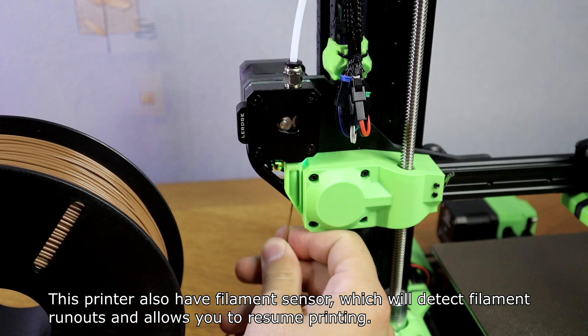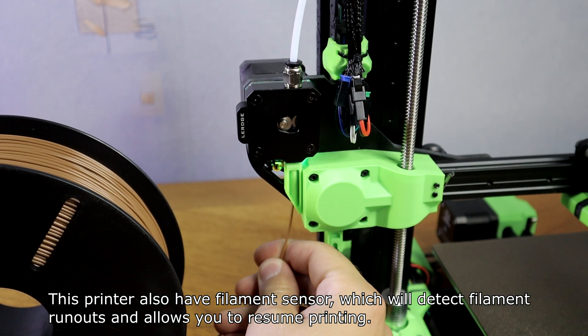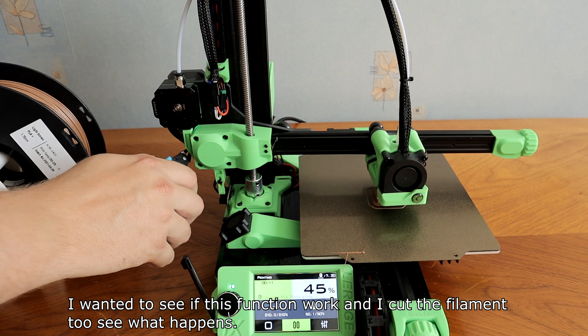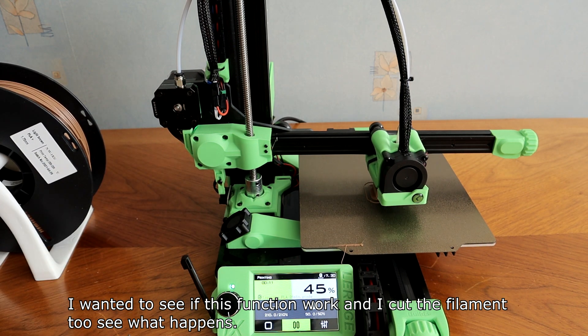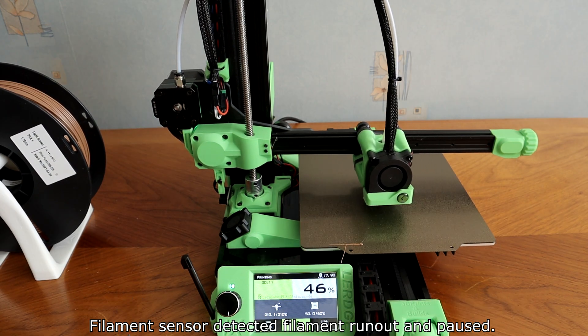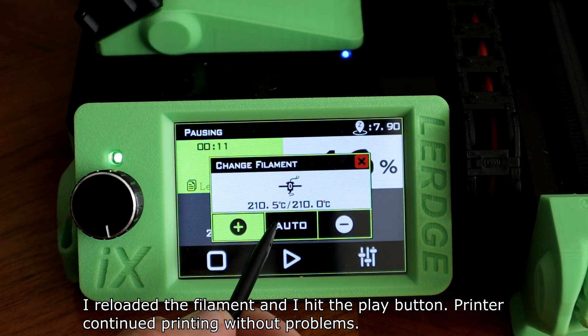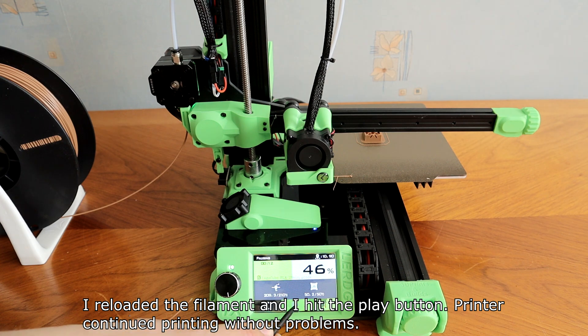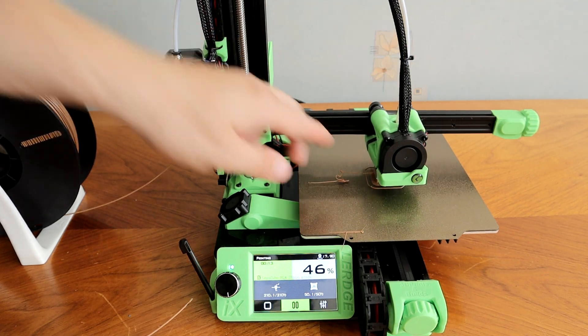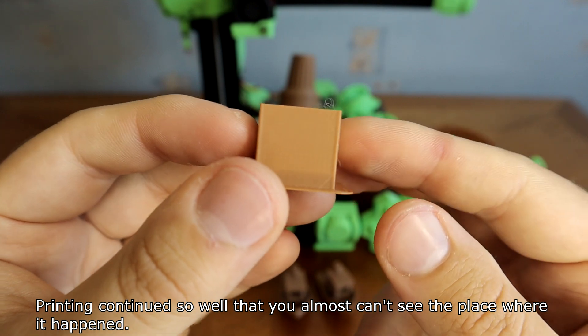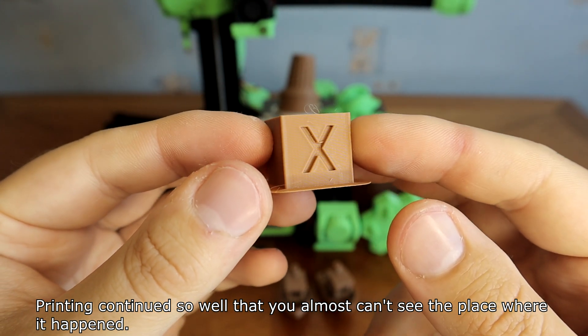This printer also has a filament sensor, which will detect filament runouts and allows you to resume printing. I wanted to see if this function works and I cut the filament to see what happened. Filament sensor detected filament runout and paused. I reloaded the filament and hit the play button. Printer continued printing without problems. Printing continued so well that you almost can't see the place where it happened.